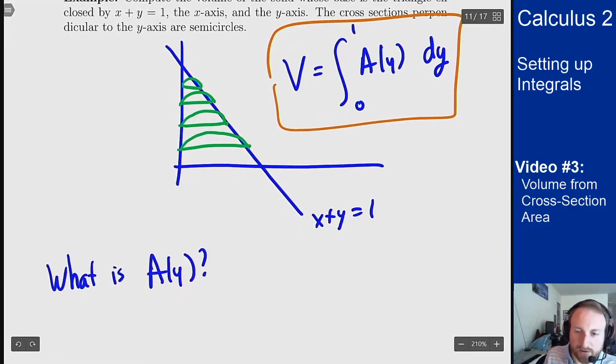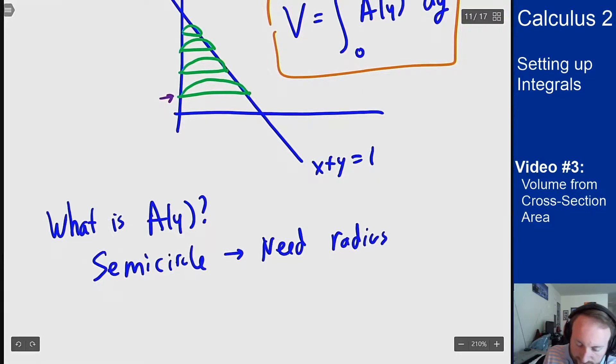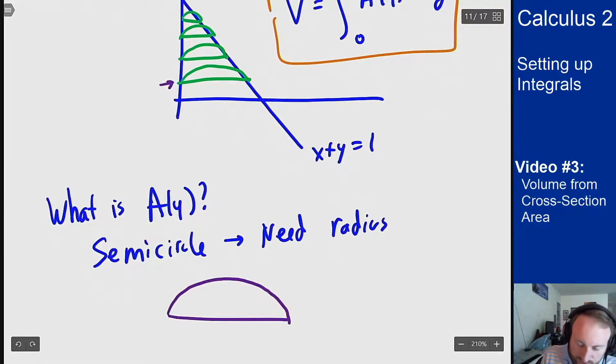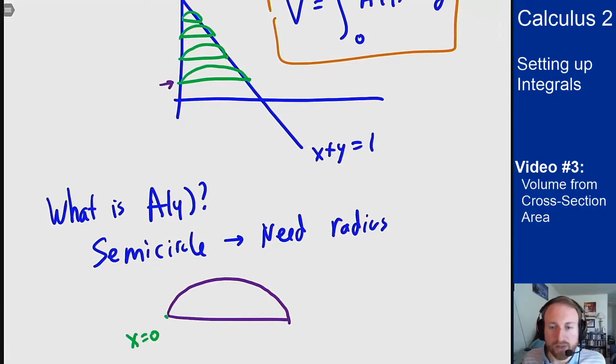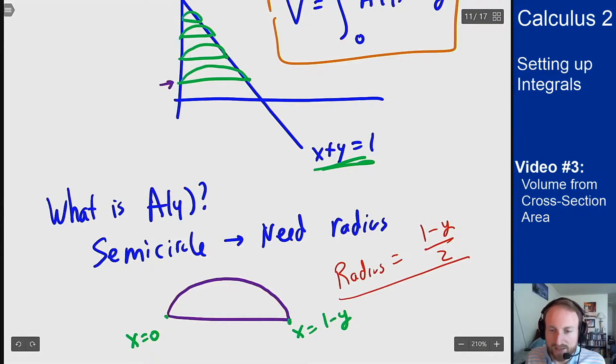So what is A of y? Well the shape here is a semicircle and to find the area I need the radius. So let's pull out this one shape here. I have one of these semicircles. This point here is always at x equals 0. Where is the other point? Well the other point is at x equals 1 minus y because I know it's on this line here. So that means the diameter of this semicircle is 1 minus y, which means the radius is 1 minus y over 2.